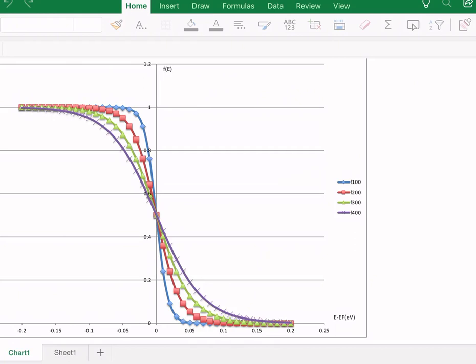And the purple, the purple one, which is 400 Kelvin, the Fermi function gets smoother.